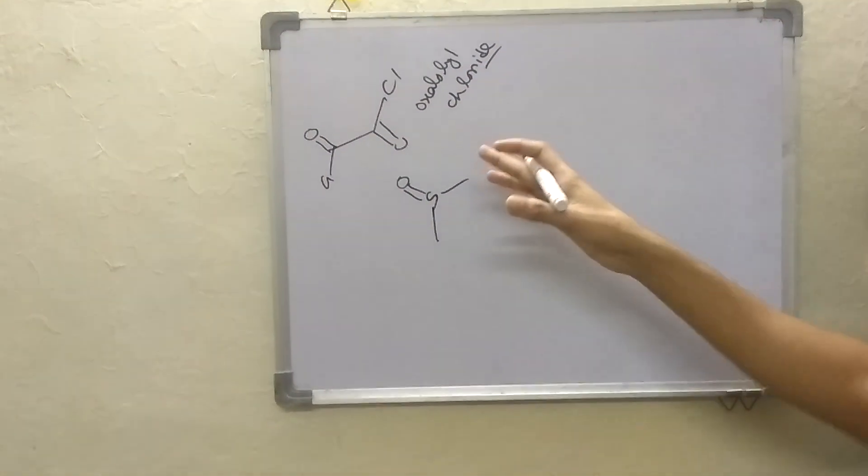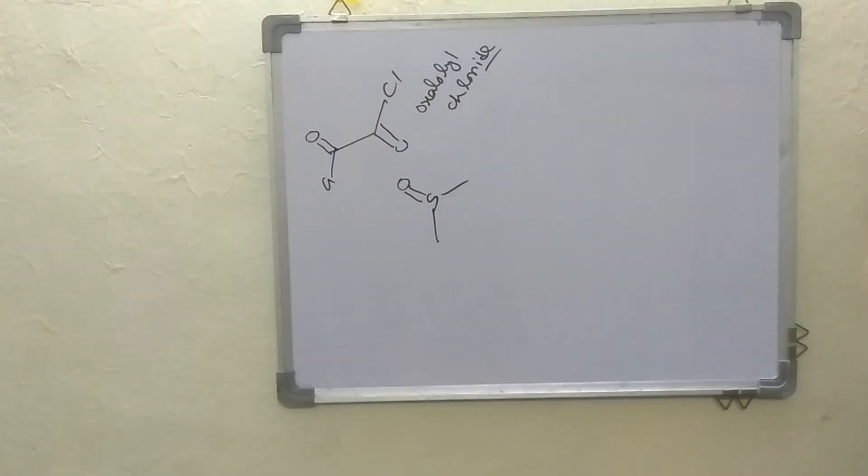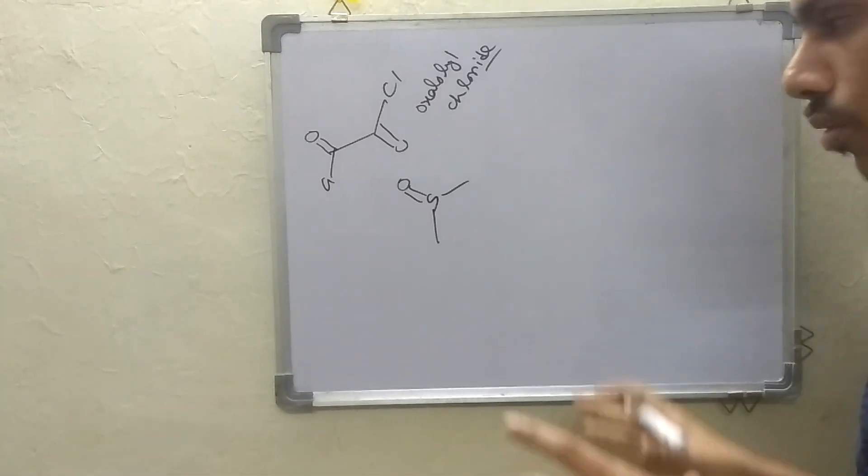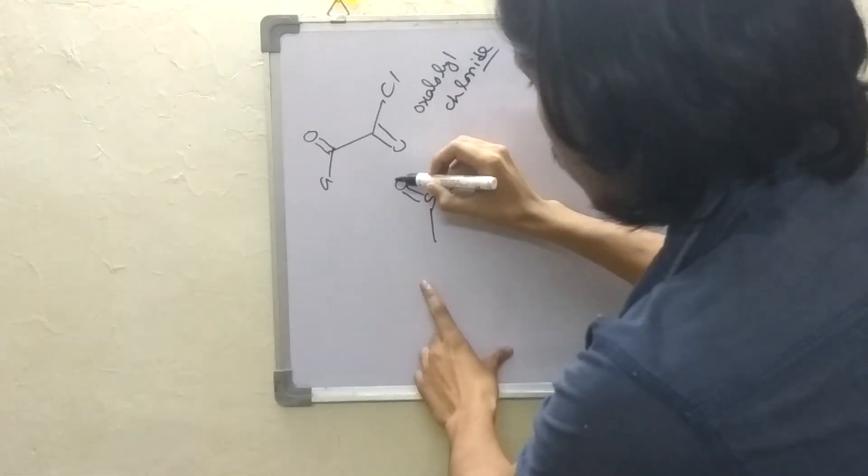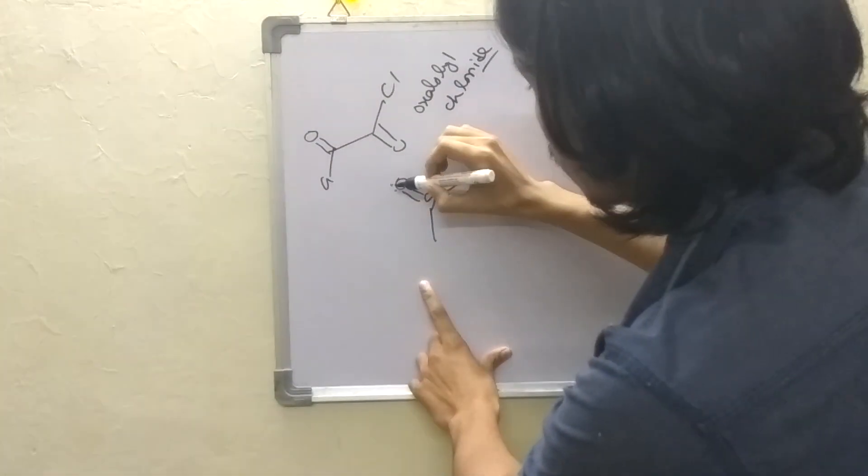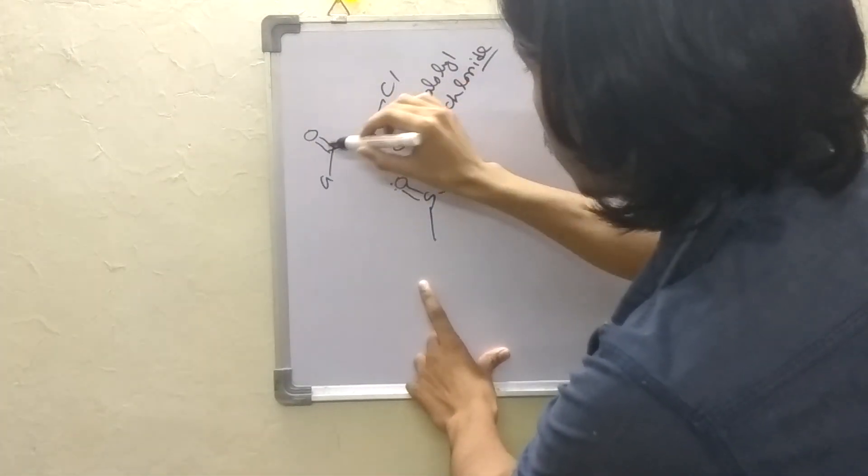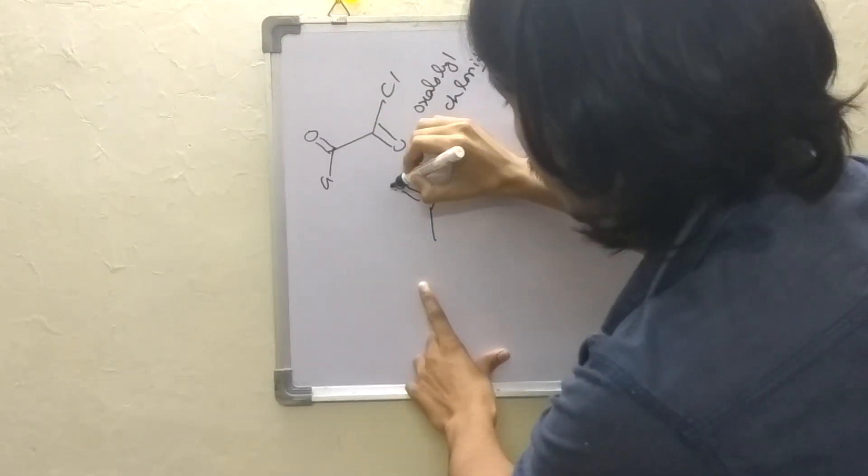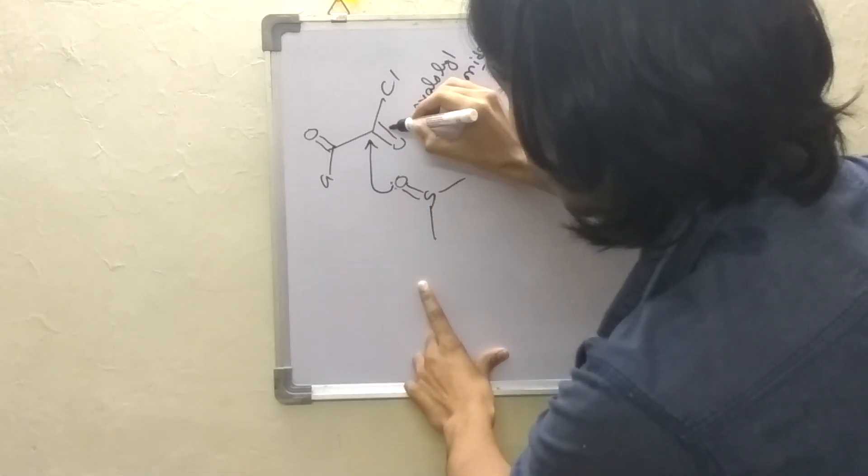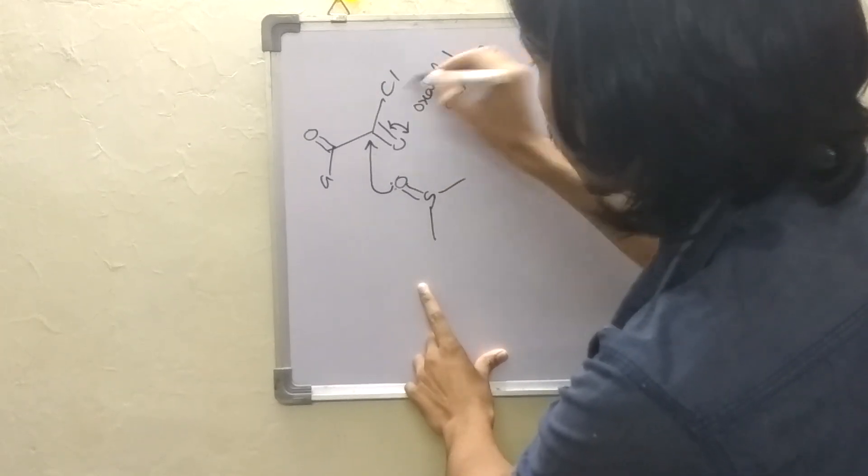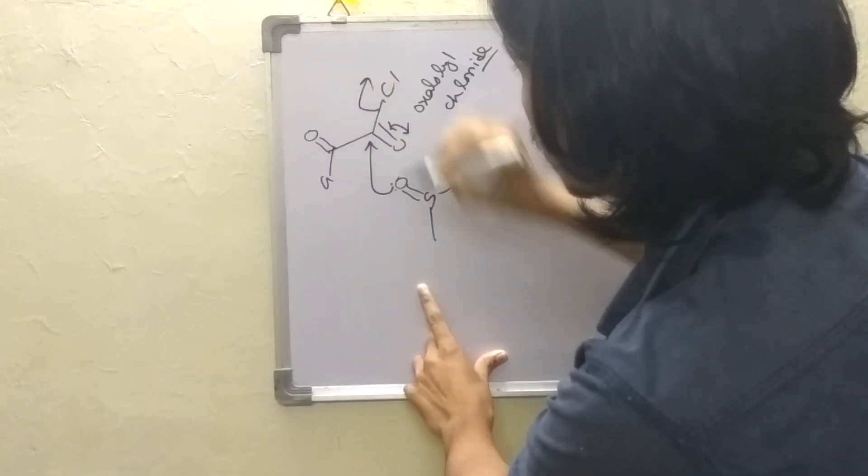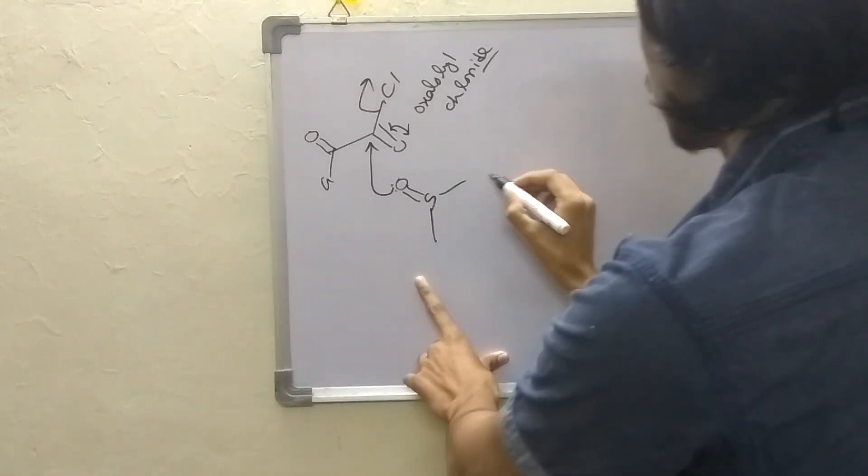When we add oxalyl chloride in the solution we have to find out what is the nucleophile and what is the electrophile in this reaction. In this case, this oxygen possesses lone pair so this is the nucleophile and these two are electrophilic centers. So this lone pair will attack here and this oxygen lone pair will first come out and then push and this chlorine will be removed.